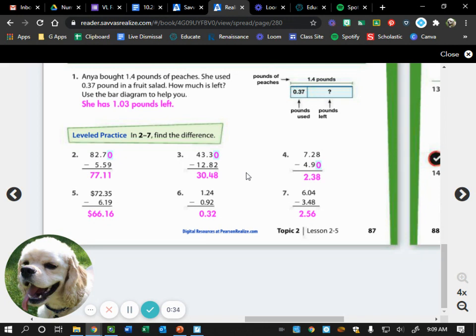We subtracted decimals yesterday. 7 and 28 hundredths minus 4 and 90 hundredths would get you 2 and 38 hundredths. Now, notice you were supposed to fill in any of those spaces with zeros. So, make sure you did that. Number five, we had $72.36 minus $6.19, which you would then wind up with $66.16.